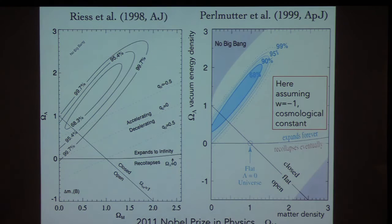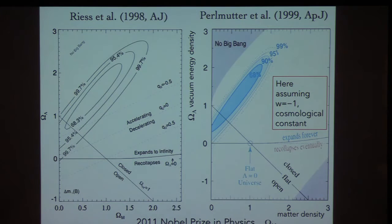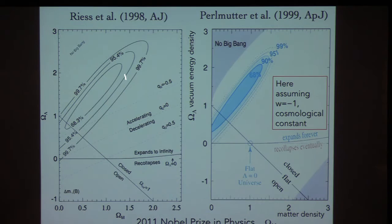These were the constraints from those two teams of astronomers observing tens of supernovae in the late 1990s — the High-Z Supernova Team on the left, the Supernova Cosmology Project on the right. The plot shows the energy density of the vacuum relative to the energy density of matter. The fact that the contours push toward positive values of the cosmological constant was the indication of cosmic acceleration. The likelihood is peaked at non-zero positive values of vacuum energy, and the probability is overwhelmingly concentrated in the accelerating universe.